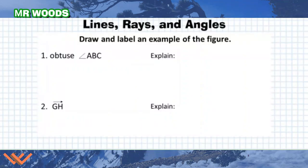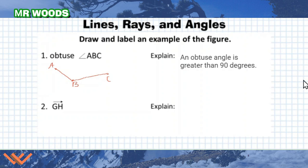Here we have some questions or problems: lines, rays, and angles. Draw and label an example of the figure. Number one, obtuse angle ABC. This is classified as an obtuse angle. I'm going to draw an obtuse angle. I'll label it A, B, and C, and put some points here. An obtuse angle is greater than 90 degrees, and this is definitely greater than 90 degrees for that angle.